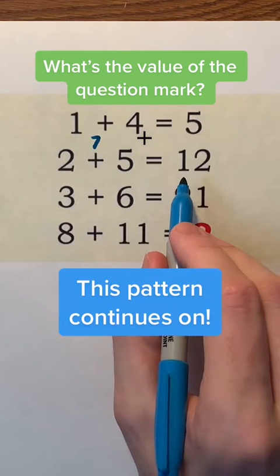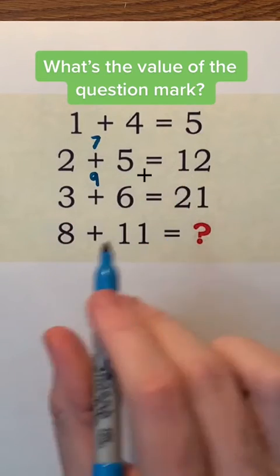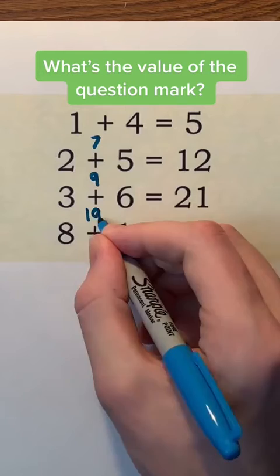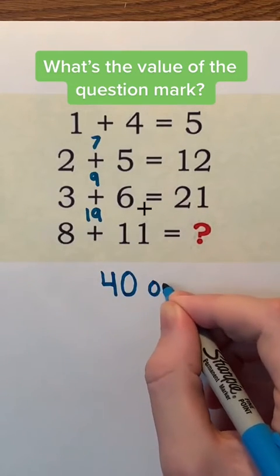This pattern continues on. 3 plus 6 is 9, and 9 plus 12 is 21. 8 plus 11 is 19, and 19 plus 21 is 40, so one possible value of the question mark is 40.